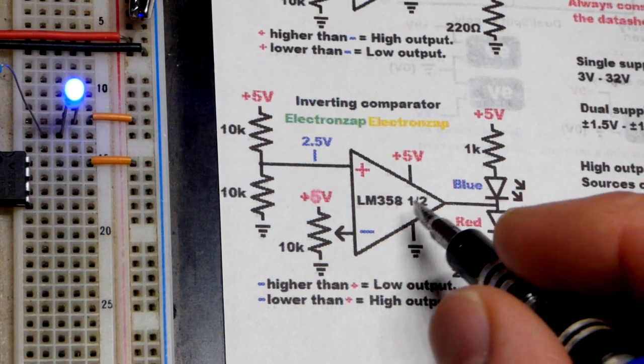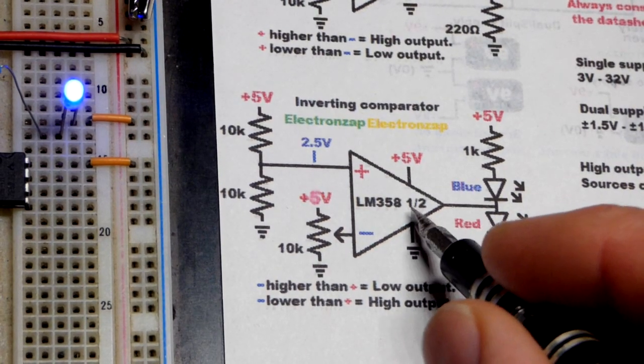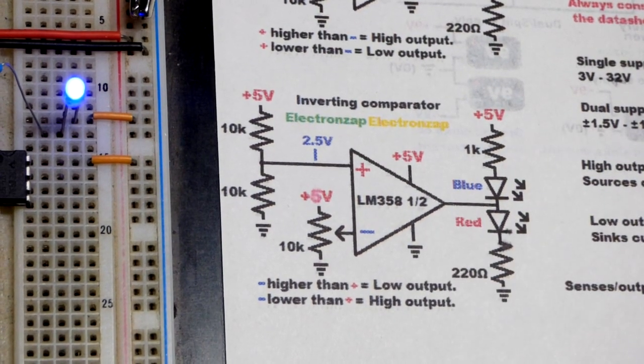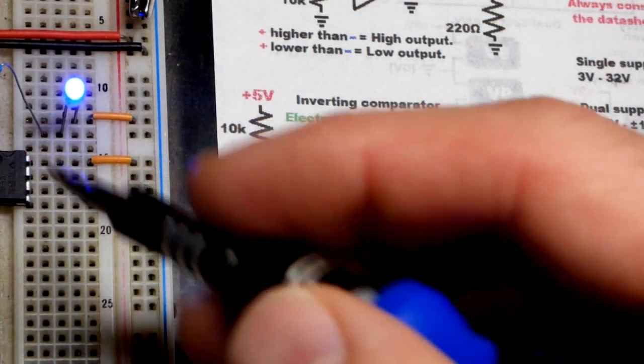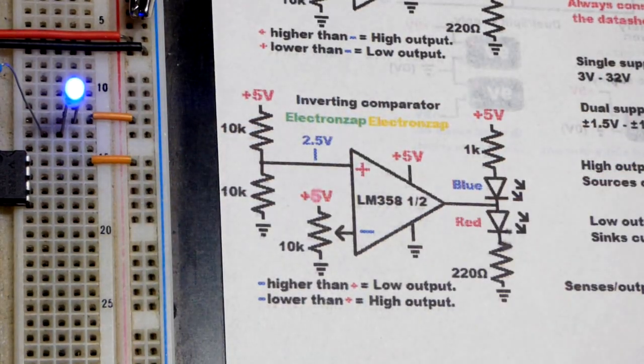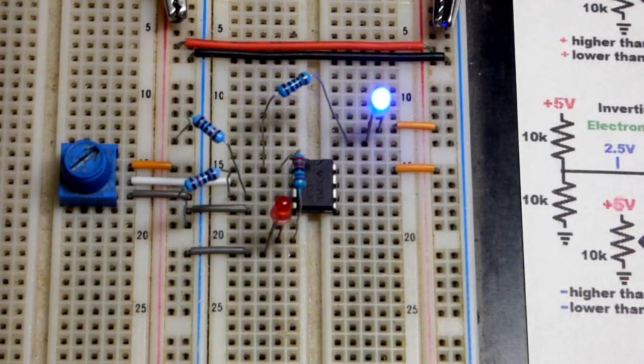And as always, there's two op amps in this integrated circuit. We're just using one out of two of them. If we had a second op amp as part of this circuit, then we could use the other side and have it say two out of two.